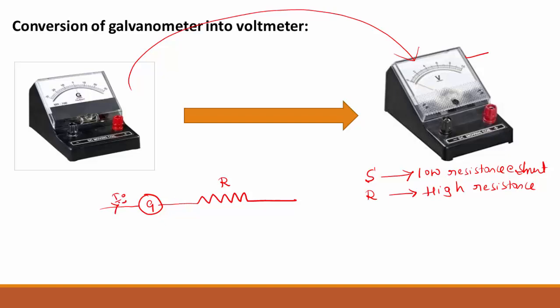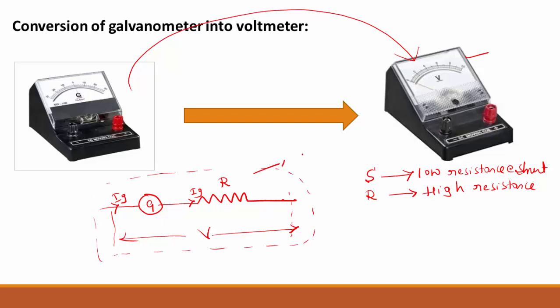Suppose Ig is the current required for full scale deflection in this galvanometer. The potential difference across this circuit is mathematically denoted by the symbol V. This dotted line indicates this is the converted voltmeter. The galvanometer can be converted into voltmeter by connecting a suitable high resistance R in series with the galvanometer.